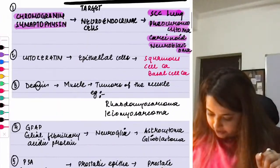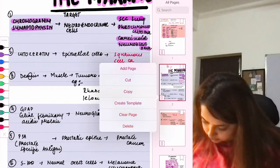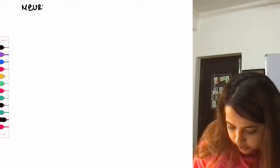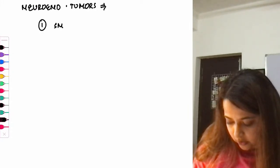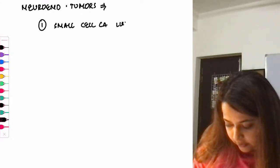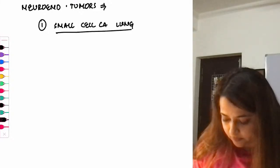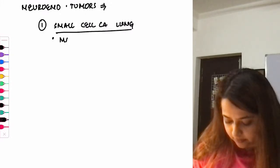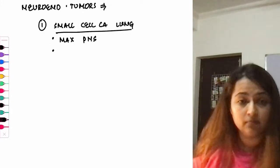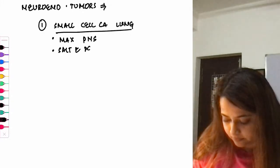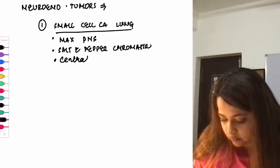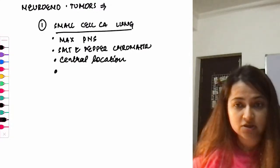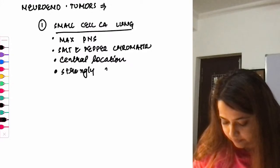Regarding small cell carcinoma of the lung: number one, it is the cancer with the maximum paraneoplastic syndromes. Second, it shows salt and pepper chromatin. Third, it has a central location. Fourth, it has a very strong association with smoking.